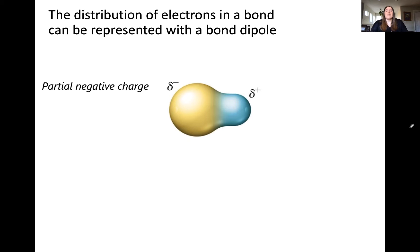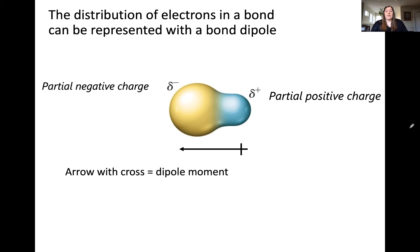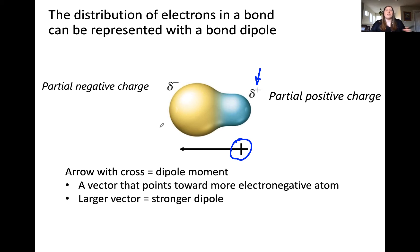A bond dipole is a vector that involves representing the partial negative charge, given by the delta negative symbol, and the partial positive charge, given by the delta positive symbol. The negative charge is associated with the more electronegative atom, meaning it has more electron density on that side of the bond. This dipole moment is an arrow which has a cross on one end — I remember this as being the positive end because it correlates with the partially positive charge — and on the other end the arrow points toward the partially negative end, toward the more electronegative atom.